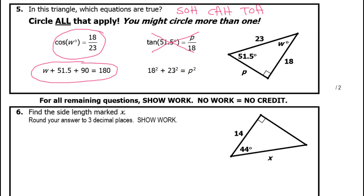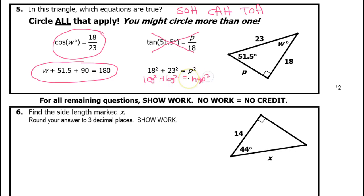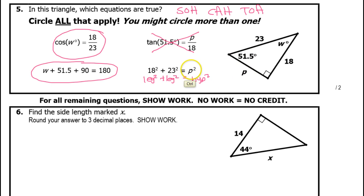This looks like the Pythagorean theorem. The Pythagorean theorem is supposed to be leg squared plus leg squared equals the hypotenuse squared. But the hypotenuse is 23, and here they have P in that position. P is not the hypotenuse, so this is in the wrong order to be true. So we are definitely not going to circle that one. It's only those two that are true.